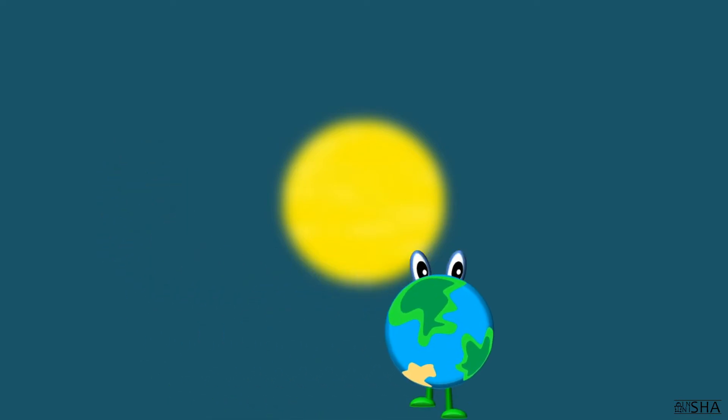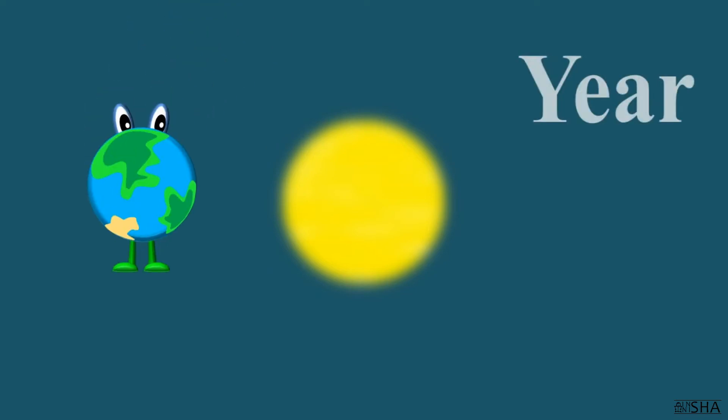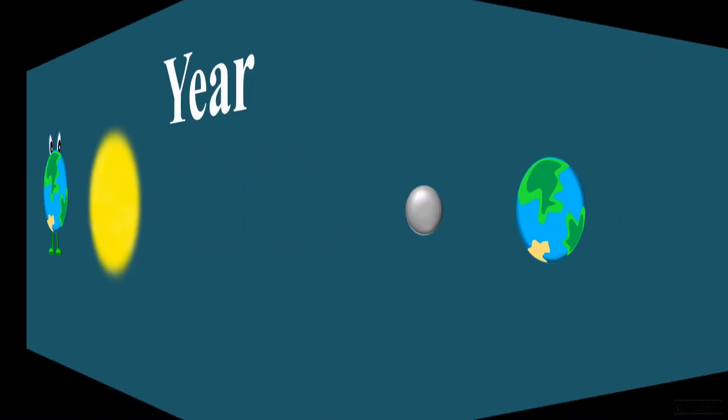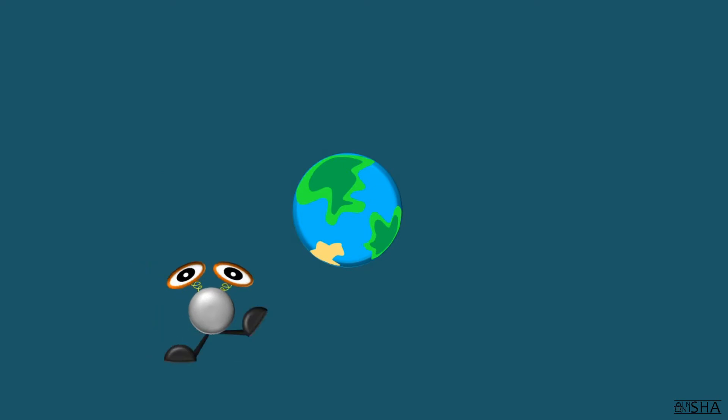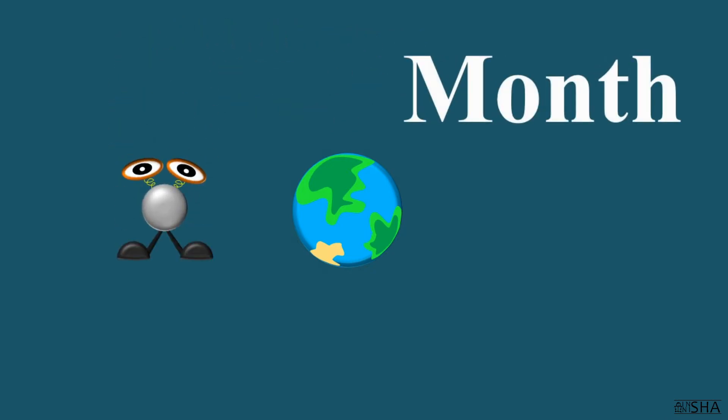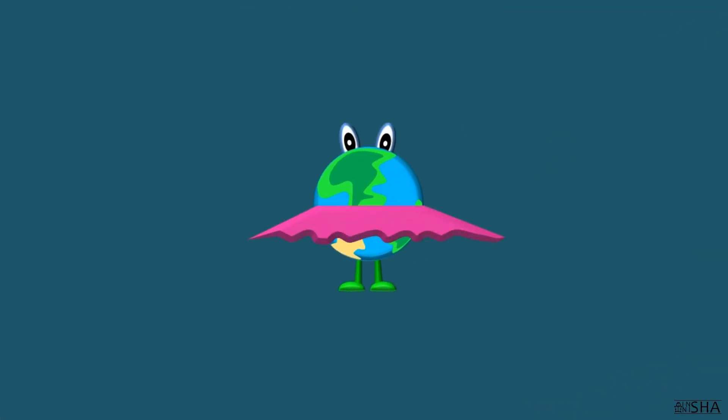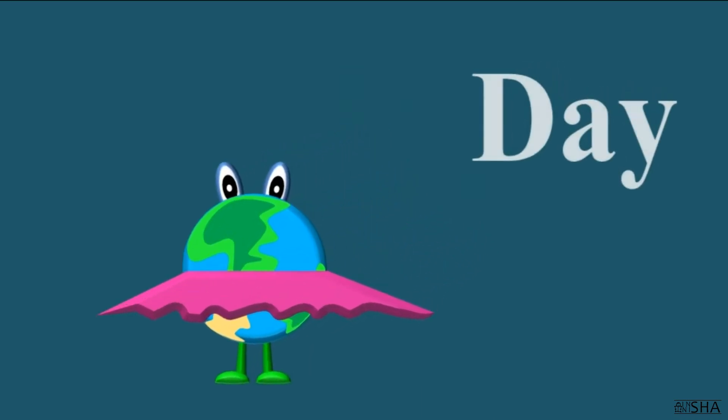The time during which the earth makes a rotation around the sun is called a year. A month is a time during which the moon makes a rotation around the earth. The time during which our planet makes one rotation around its axis is called a day.